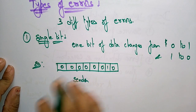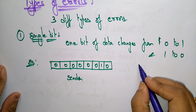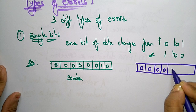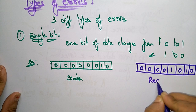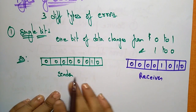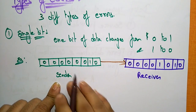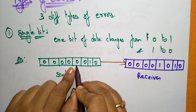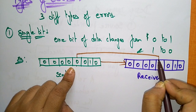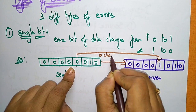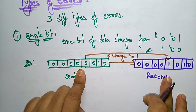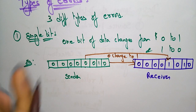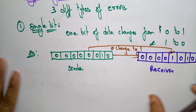Let us take 8 bits of data. The sender is sending this 8-bit data and the receiver wants to receive it. In between, one bit of data is changed from 0 to 1. You can observe that the sender sent a 0 and the receiver receives a 1 — so a 0 changed to 1. That is a single bit error. An error can occur with a single bit, and the first type of error is the single bit error.